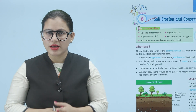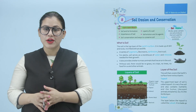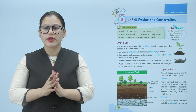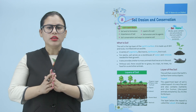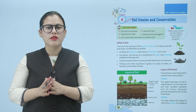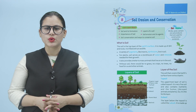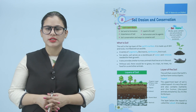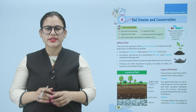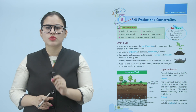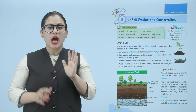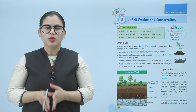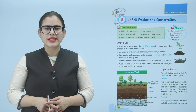Layers of the soil: the soil that covers the earth's surface has various layers. Topsoil — the uppermost layer of soil is called topsoil. It is very fine soil and also contains nutrients and humus (decayed animals and plants), so it is a fertile layer. Topsoil uppermost layer ko bolte hain topsoil. Yeh bohot fine soil hoti hai jis mein nutrients ya phir humus hota hai, toh yeh sab se fertile layer hoti hai.